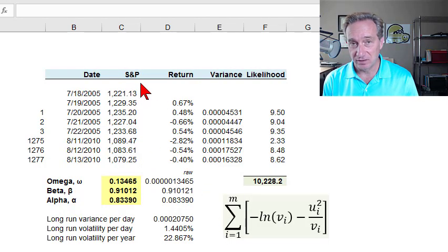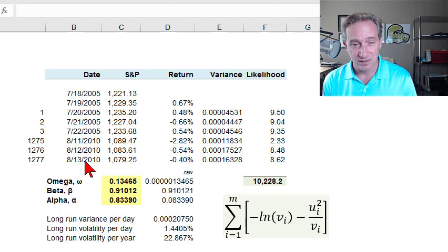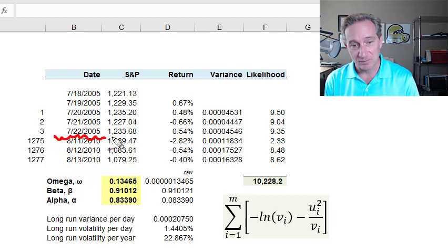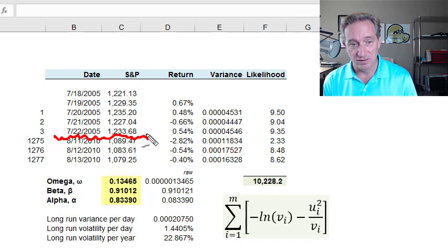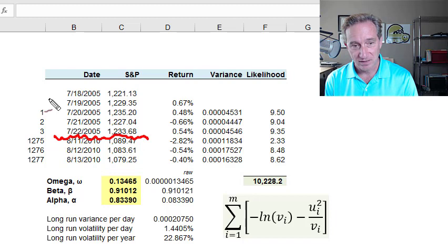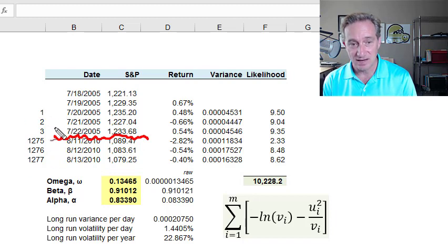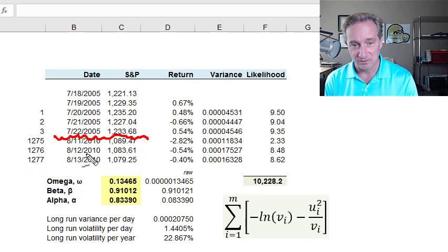So the data set I'm using is from John Hull's website. It's right here. The S&P 500 index values starting at July 18, 2005, and it looks like the data set goes up through August 13, 2010. As usual, I've collapsed the rows, the interim rows. In this case, it's several hundred rows because this is a tall data set. And over here, we have the day count. So day one, two, three, going up through 1,277 days or about three and a half years with this data set.